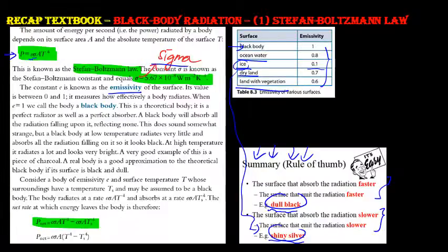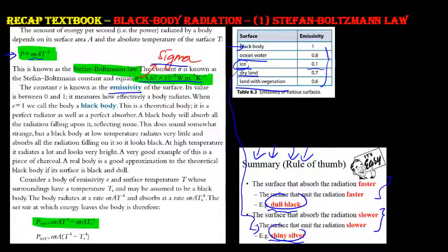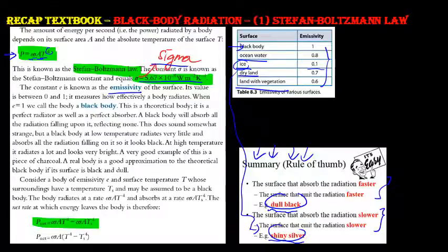σ is the Stefan-Boltzmann constant — you don't need to worry too much about its value. A is the surface area, and T is the temperature. Don't forget T must be in Kelvin and is raised to the power of four.